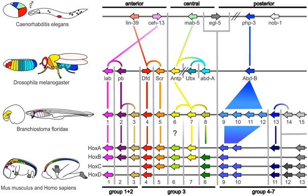The field grew from 19th-century beginnings, where embryology faced a mystery. Zoologists did not know how embryonic development was controlled at the molecular level. Charles Darwin noted that having similar embryos implied common ancestry, but little progress was made until the 1970s. Then, recombinant DNA technology at last brought embryology together with molecular genetics.